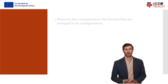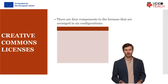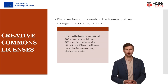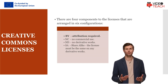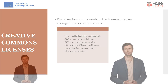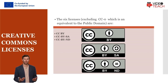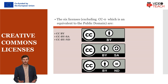There are four components to Creative Commons licenses, arranged in six configurations: Attribution (BY) required, NC (no commercial use), ND (no derivative works), and SA (share alike — the license must be the same on any derivative works). The six licenses, excluding CC Zero which is equivalent to the public domain, begin with CC BY. This license allows re-users to distribute, remix, adapt, and build upon the material in any medium or format, so long as attribution is given to the creator, and allows for commercial use.